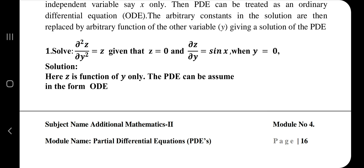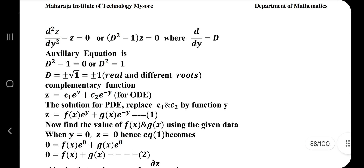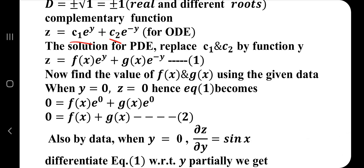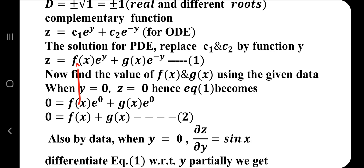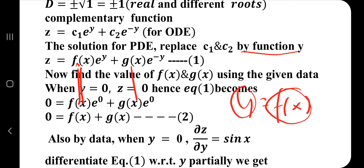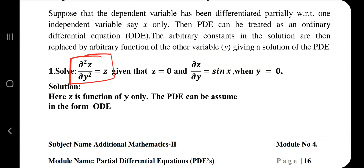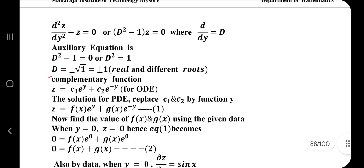Once you confirm it involves only one variable, treat it like an ODE. Write the auxiliary equation: D² − 1 = 0, find the D values, and write the general solution as z = c₁eʸ + c₂e⁻ʸ. If you're unfamiliar with this, watch the module 3 video. Under this topic, replace constants c₁ and c₂ with functions of x — write them as f(x) and g(x) — because we are differentiating with respect to y.